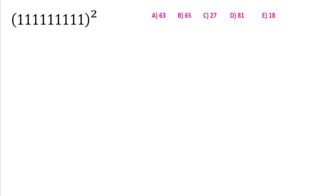Welcome to Definite Mind. In this question we have to find the sum of digits for this square — that is, after squaring this 9-digit number of 1s, whatever result comes, we have to find the sum of digits for that result. So how will we find the sum of digits for this square? I will give you two solutions in this video, so watch till the end.